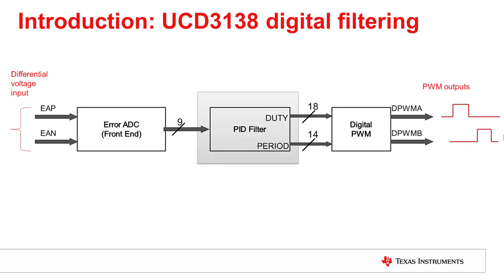We will briefly introduce the UCD3138 filter and show how it fits in the control loop with the front end and DPWM modules. The filter in the UCD3138 family of devices is a PID filter with many enhancements for power supply control. It generally takes the output of the error ADC, which is a signed 9-bit value, as an input. The output of the filter feeds the high-resolution DPWM module, which produces the pulse width modulated outputs for the power stage switches.